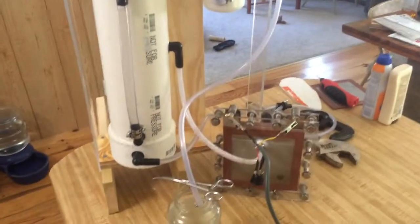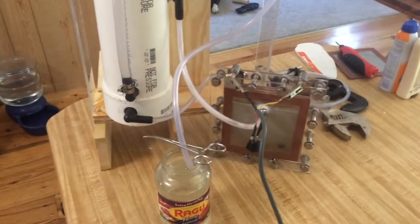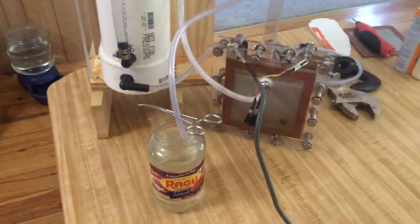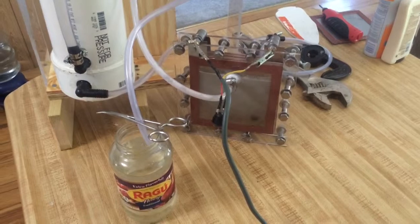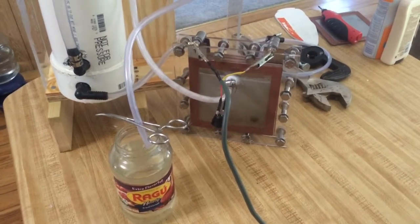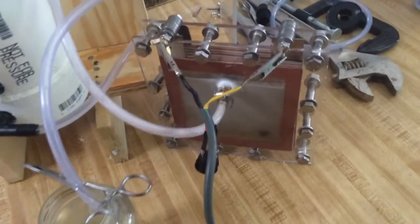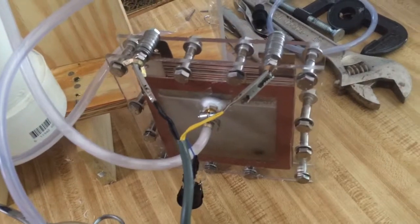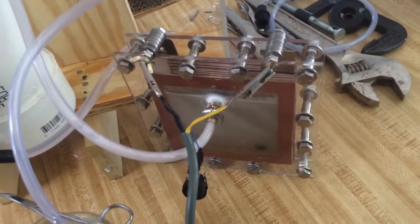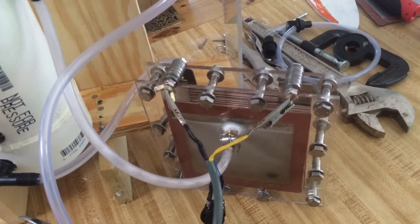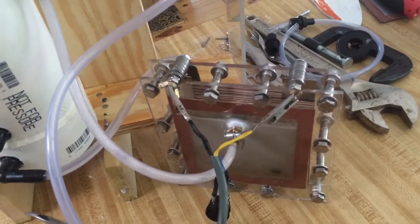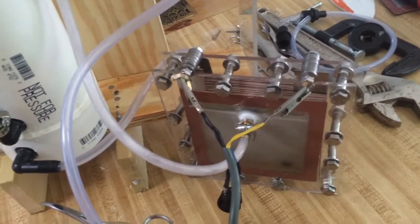So here's my nine-plate dry cell HHO system. Got six by six 304 stainless steel plates stacked with 1/16th inch gaskets. My positive negative lugs there are made of washers temporarily, gotta remake them.